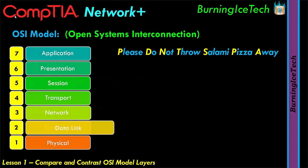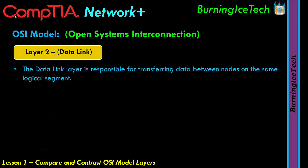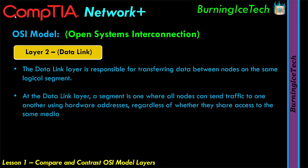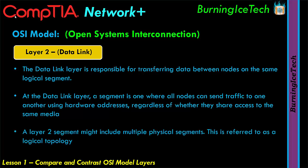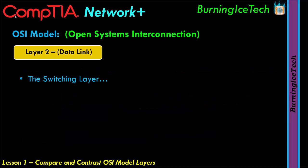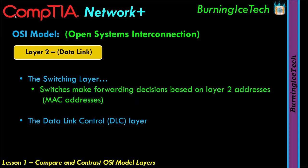Layer two is the data link layer. It's a foundation layer for protocols that stack on top of it. At the data link layer, a segment is one where all nodes can send traffic to one another using hardware addresses — sometimes called layer two addresses — which are things like MAC (Media Access Control) addresses. A layer two segment might include multiple physical segments, referred to as a logical topology. The data link layer is sometimes called the switching layer because switches work at layer two and make forwarding decisions based on MAC addresses.